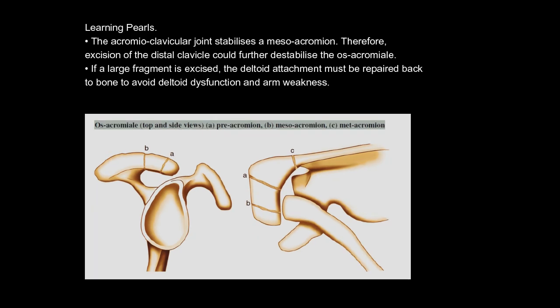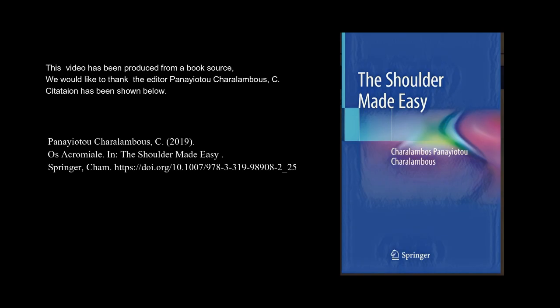Learning pearls: the acromioclavicular joint stabilizes a mesoacromion; therefore, excision of the distal clavicle could further destabilize the os acromiale. If a large fragment is excised, the deltoid attachment must be repaired back to bone to avoid deltoid dysfunction and arm weakness.